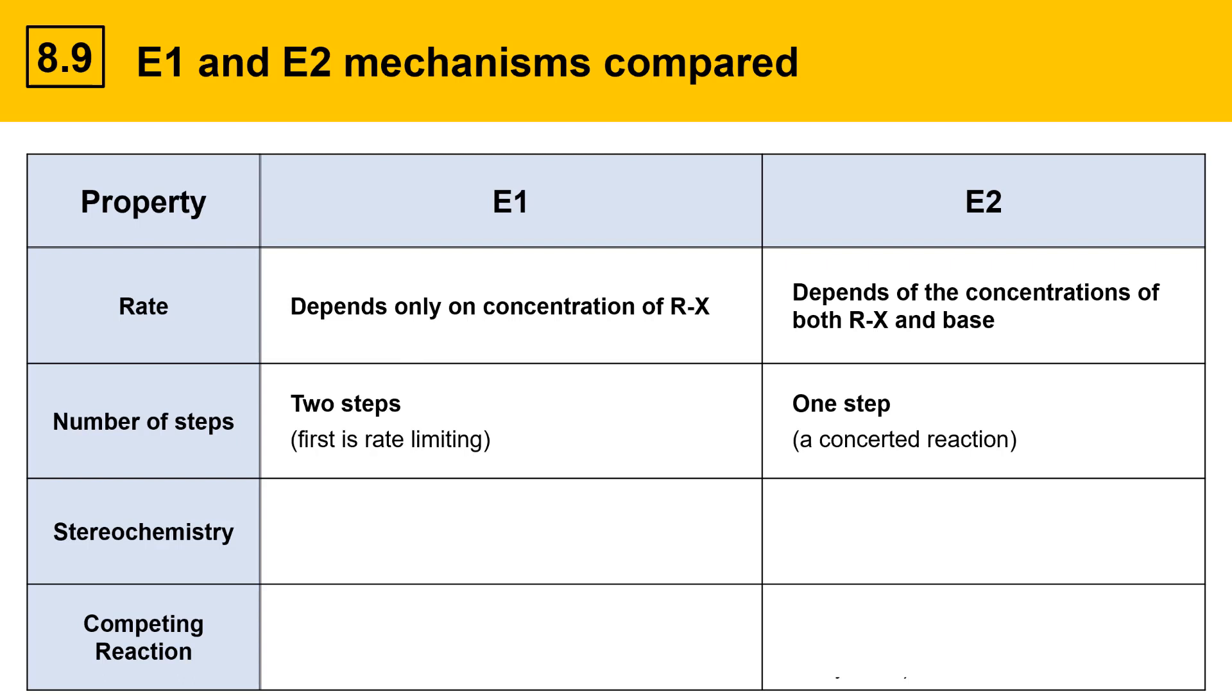For stereochemistry, there are no special stereorequirements associated with the E1 mechanism. However, for E2, there's a special transition state geometry that's required. The transition state must be anti-coplanar. The leaving group and the beta proton have to be in the same plane, and typically they're anti to one another, 180 degrees apart. That's important and influences the stereochemistry of the products.